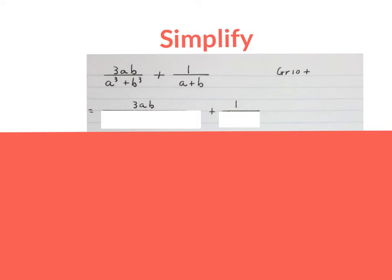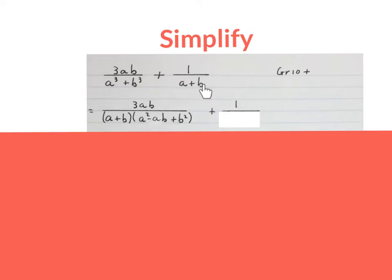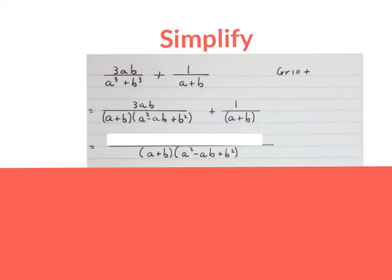First thing we're going to do is make the denominators friendly and factorize them if possible. So we write our lines down, put the numerators at the top, then try and factorize this denominator. This denominator is already friendly — I advise you to just put a bracket around it. Now we write our LCD and keep it, and this will be my LCD.